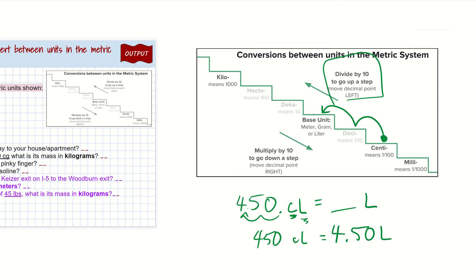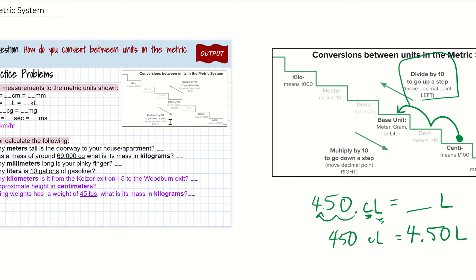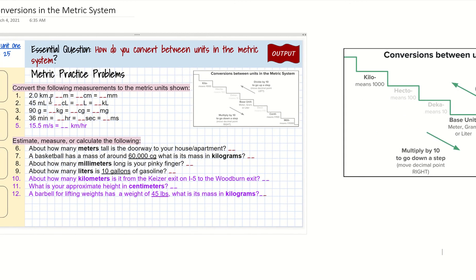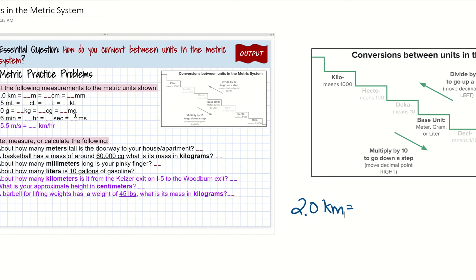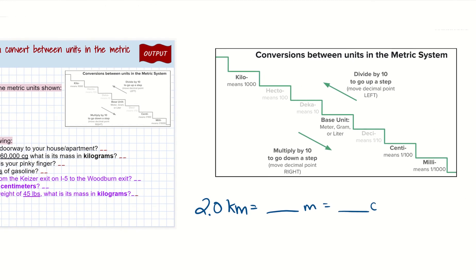Now I'm going to walk through one of the example problems on slide 25 of your e-notebook. Conversion question number one: you have 2.0 kilometers, and you need to figure out how many meters, centimeters, and millimeters that equals. Let's start at kilo — km tells me I'm at kilo, so the lowercase k stands for kilo.